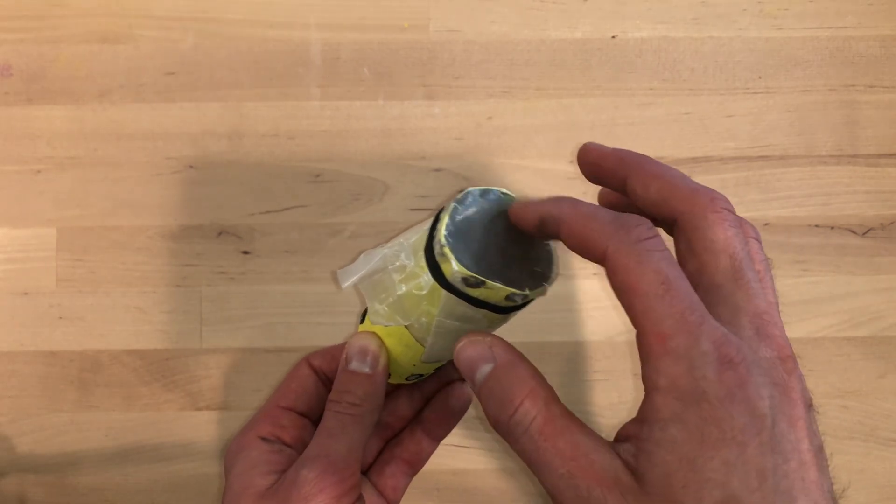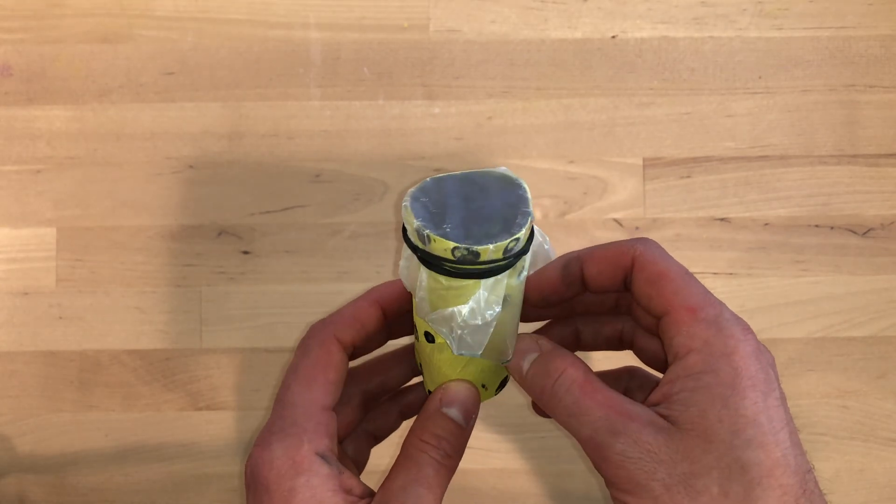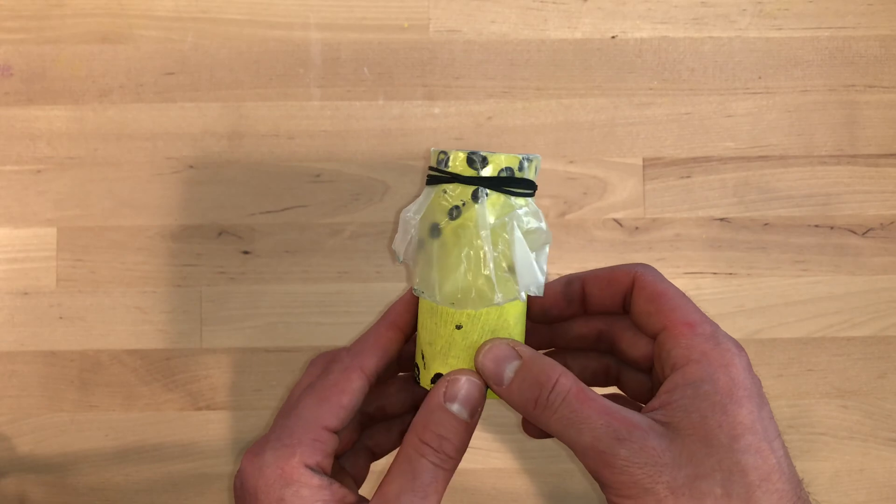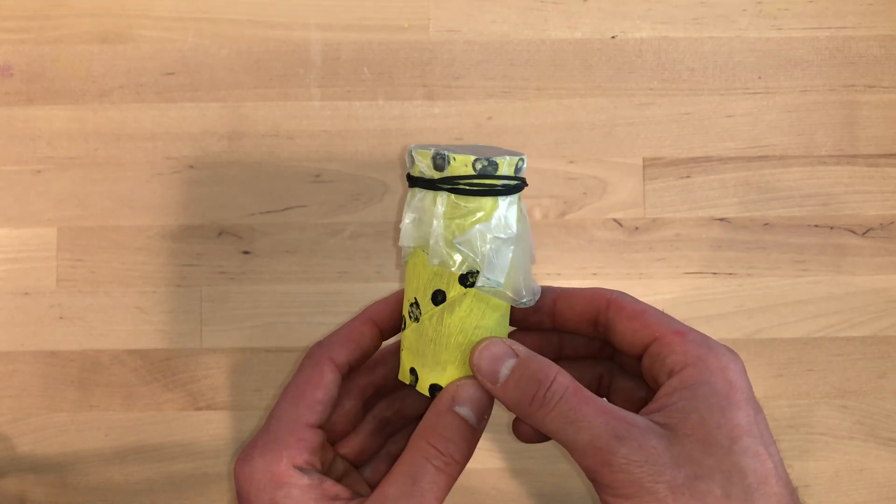When you hum, talk, or sing into a kazoo, the air produced by your voice vibrates the membrane or resonator, creating its unique buzzing sound.